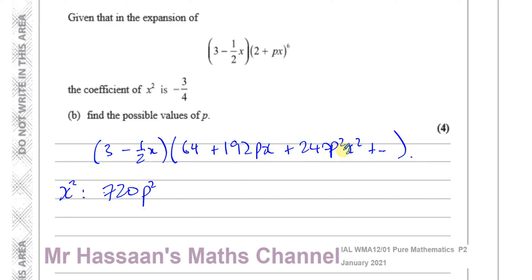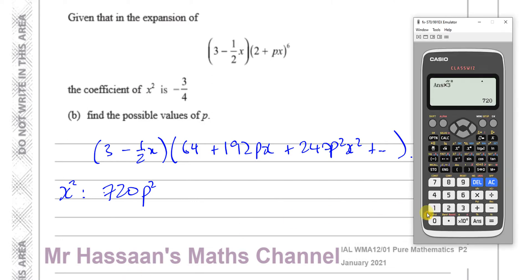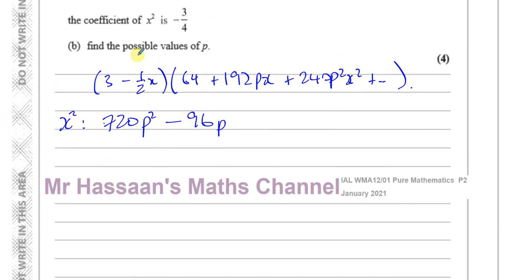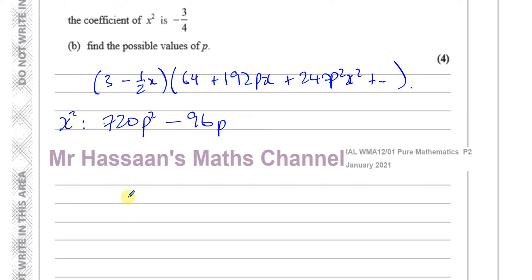Now looking at the −½x term: multiplying −½x by 64 gives only an x term. But multiplying −½x by 192Px gives an x² term. Taking 192 divided by 2 gives 96, so this contributes −96Px². Multiplying −½x by the next term would give x³, so it doesn't contribute. These are all the x² terms, and the coefficient of x² equals −¾.